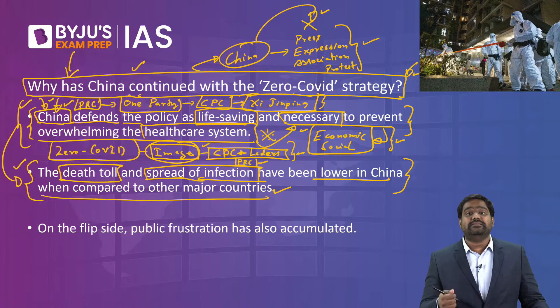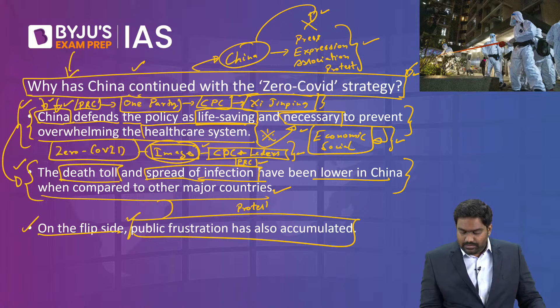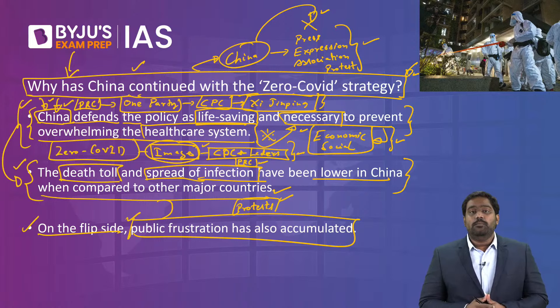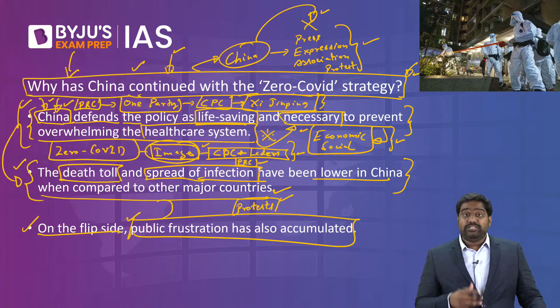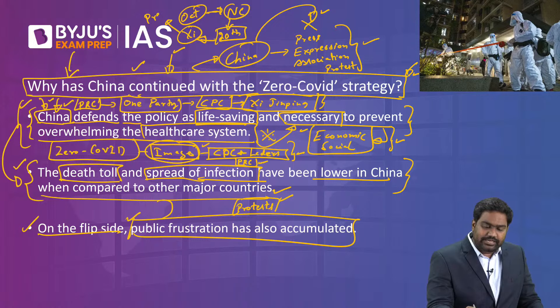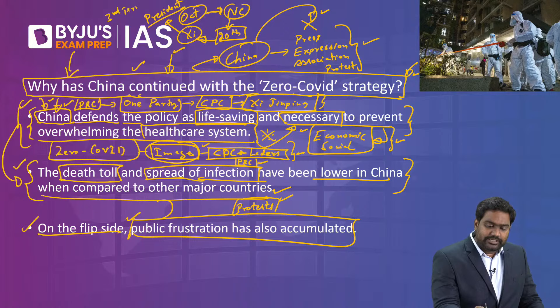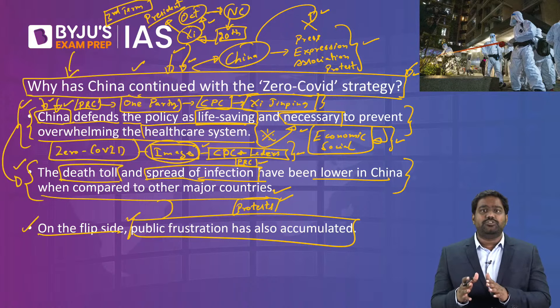Public frustration has accumulated over the last few years, especially in recent months. Small-scale protests had been happening, but the fire accident in Xinjiang became the trigger for widespread protests that spread across the country and rattled the Chinese leadership. This comes as quite a shock to China because just last month in October, the 20th National Congress of the Communist Party was held. Xi Jinping emerged as president again for a record third term, consolidating his power. At this crucial time of power transition, China has been hit by this internal crisis.